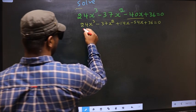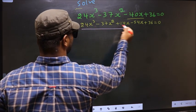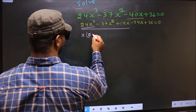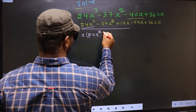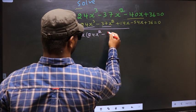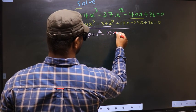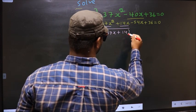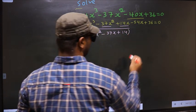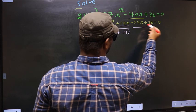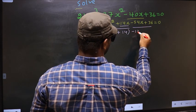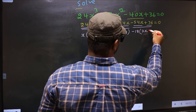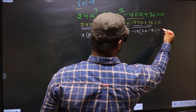What can be taken out common from the first three terms is x. So you get x times 24x² minus 37x plus 14. What can be taken out common from the last two terms is minus 18. So you get minus 18 times 3x minus 2, equal to 0.